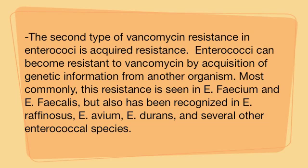The second type of vancomycin resistance in Enterococci is acquired resistance. Enterococci can become resistant to vancomycin by acquisition of genetic information from another organism. Most commonly, this resistance is seen in E. faecium and E. faecalis, but also in other species listed below.